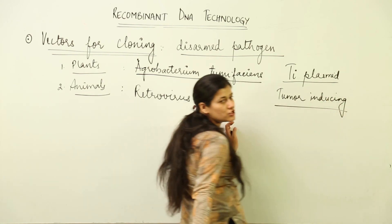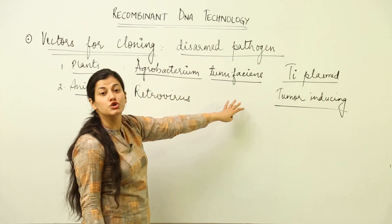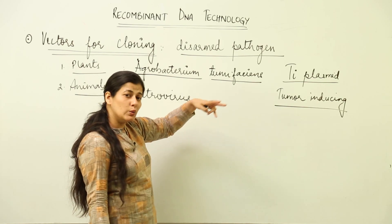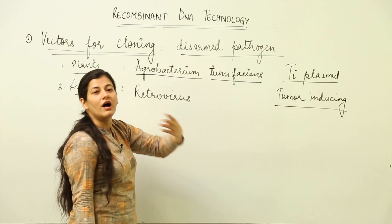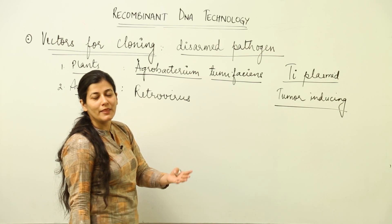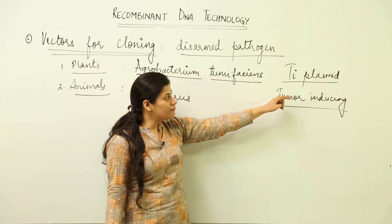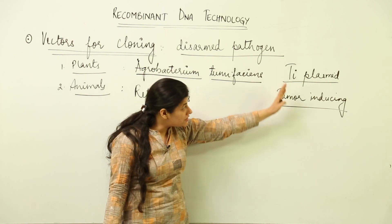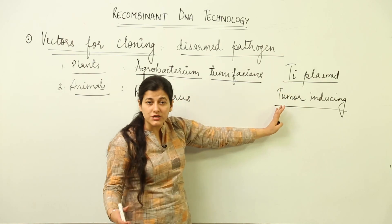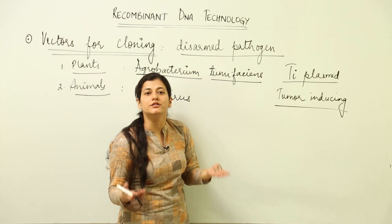So the tumor-inducing plasmid would be disarmed. The gene which is responsible for inducing tumor in the plant cells that it goes and infects will be cut, and instead our required gene would be put over there. Now the bacteria would go and infect the plant, but instead of producing tumor over there, because its Ti plasmid has been altered, it will produce our desired gene.